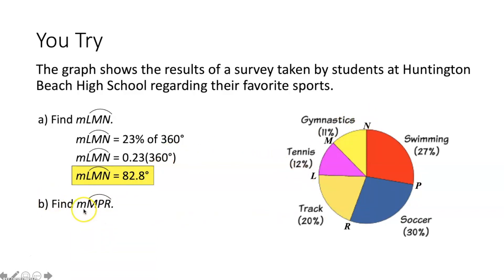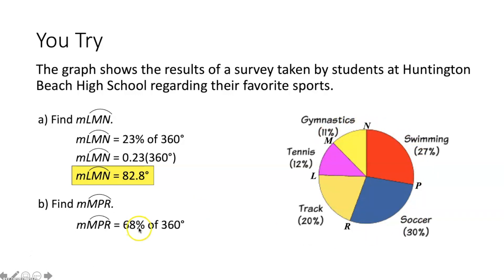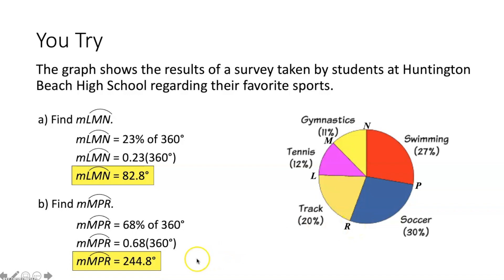Part B asks for the measure of arc MPR, which is a major arc. We find the percentage of the circle that arc MPR makes up: 11% plus 27% plus 30% equals 68%. Taking 68% as a decimal, 0.68, and multiplying by 360 degrees, we get that the measure of arc MPR is equal to 244.8 degrees.